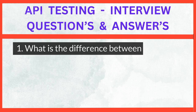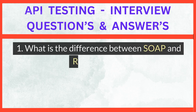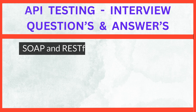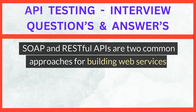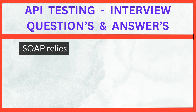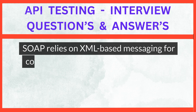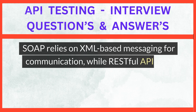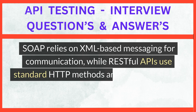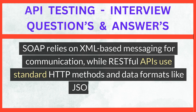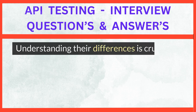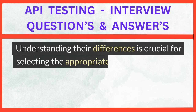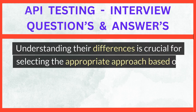What is the difference between SOAP and RESTful APIs? SOAP and RESTful APIs are two common approaches for building web services. SOAP relies on XML-based messaging for communication, while RESTful APIs use standard HTTP methods and data formats like JSON or XML. Understanding their differences is crucial for selecting the appropriate approach based on project requirements.